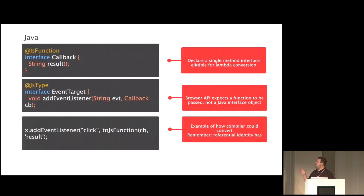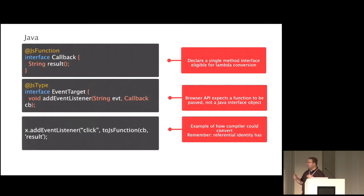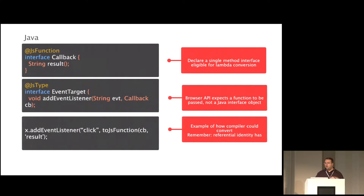Here's how it works: the EventTarget interface, which most DOM elements implement, has a method called addEventListener. The first parameter is the string name of the event, the second is a callback. If we say that the Callback interface is an @JSFunction, then when the compiler compiles this to JavaScript and passes an anonymous inner class or a Java 8 Lambda, it will automatically convert it to a raw JS function. The compiler basically turns lambdas and anonymous inner class implementations into JavaScript functions on the fly without you having to do anything.